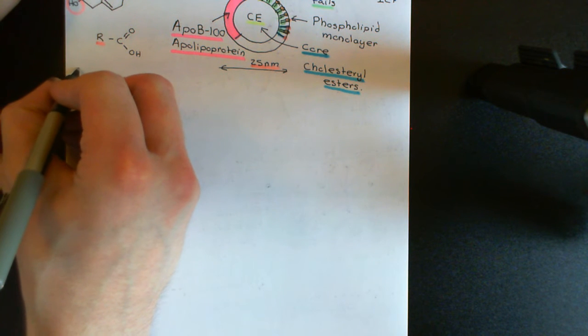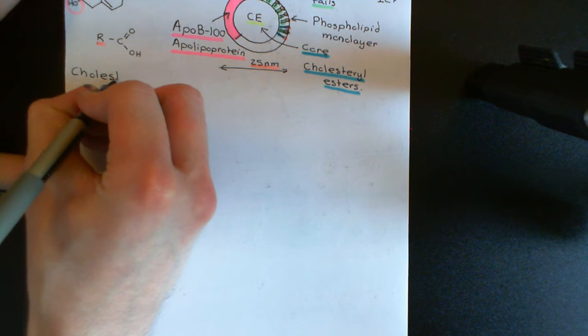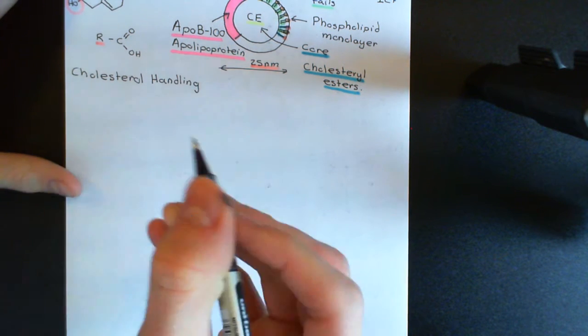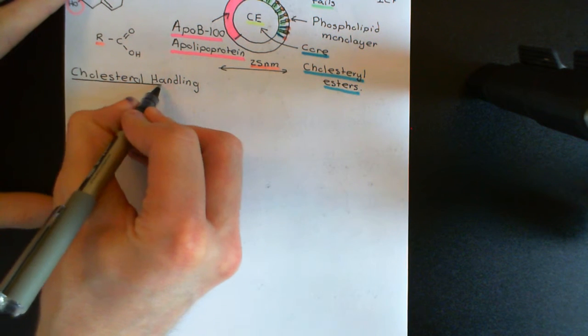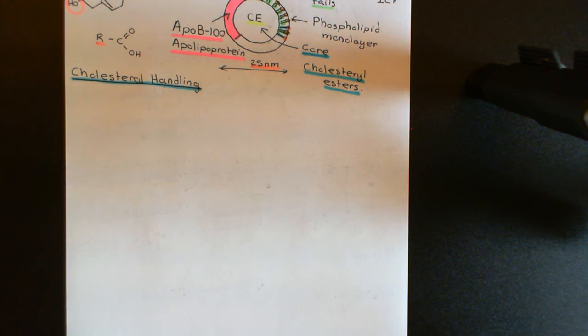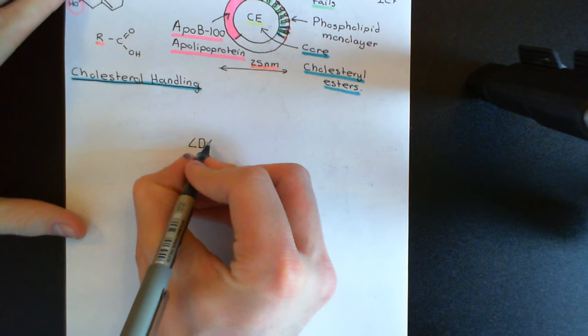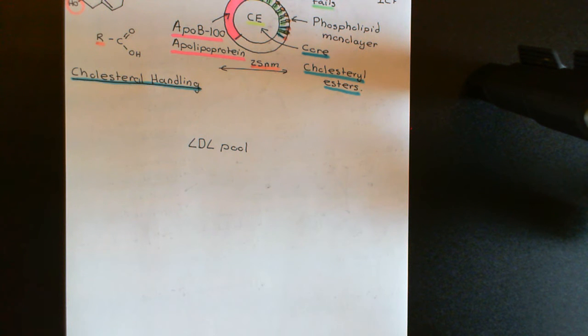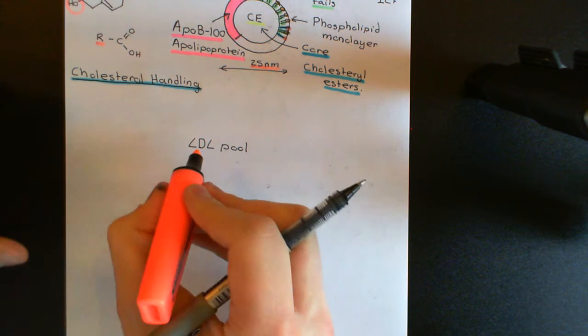Here is my simplified view of how cholesterol is handled around the body — cholesterol handling. So, LDL particles: what do they actually do? The LDL particles are the store of cholesterol within the blood. They're often referred to as the LDL pool, which is all of the LDL particles within the blood — it really is referring to this store of cholesterol stored in LDL particles within the blood.